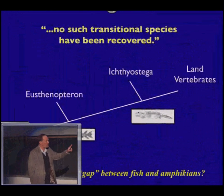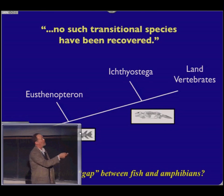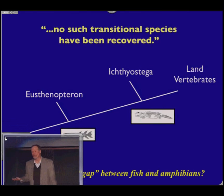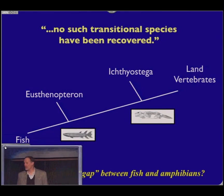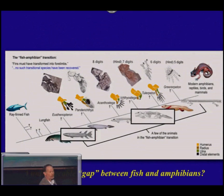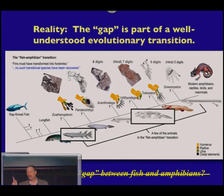What have they actually done? On the transition from fish to land vertebrates, they've picked just two examples — Eusthenopteron and Ichthyostega — and claim evolution has an unbridgeable gap. But if you look at what we actually know about this transition, they've ignored transitional forms like Acanthostega and others, and pretended these are the only ones. That statement is bogus. The reality is this so-called gap is part of a very well-understood evolutionary transition in which we can trace the development of the tetrapod limb all the way through.